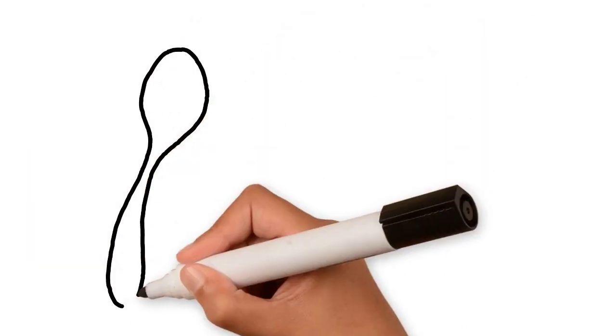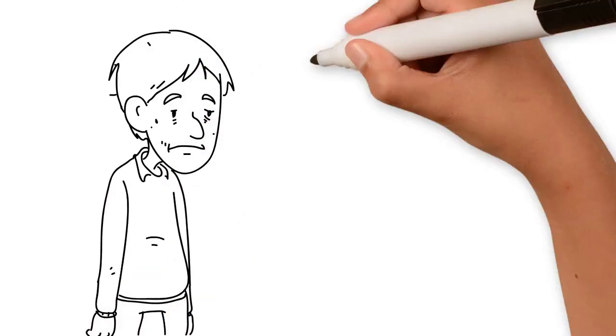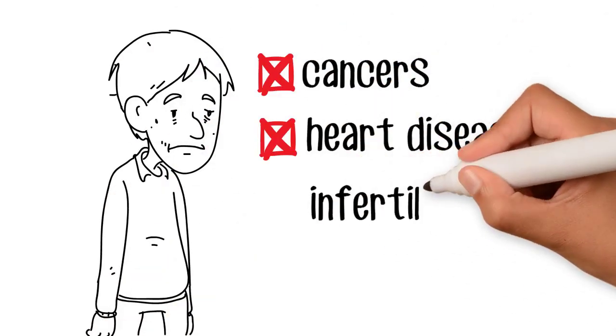Chemicals in plastics, such as Bisphenol A, aka BPA, can cause numerous health issues including cancers, heart disease, infertility, and ADHD.